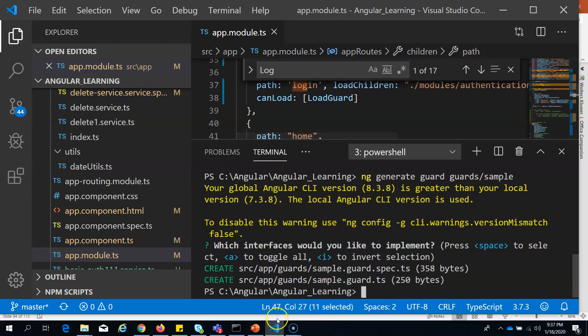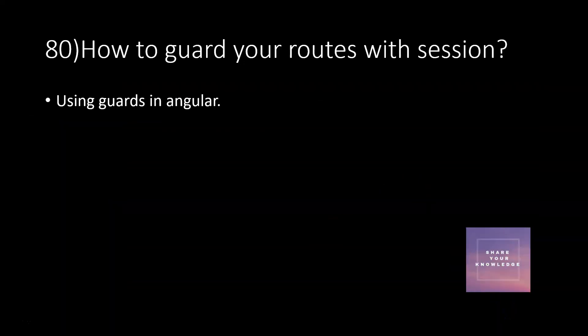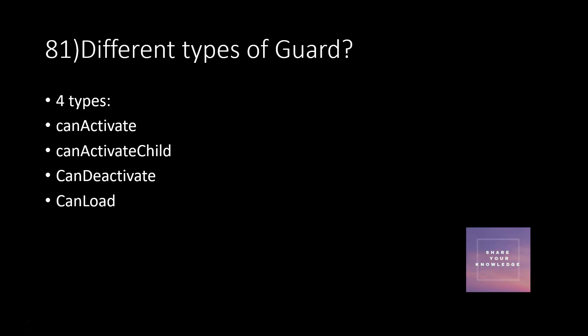Guards are implemented to prevent anyone accessing routes. You write the logic which you want to be evaluated before anyone reaches your route — maybe checking whether the session is already present. If not, you move the user back to the login page. The next question is: what are the different types of guards? We have four types.